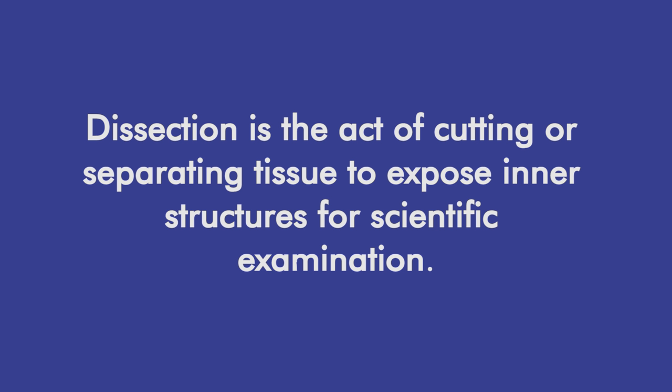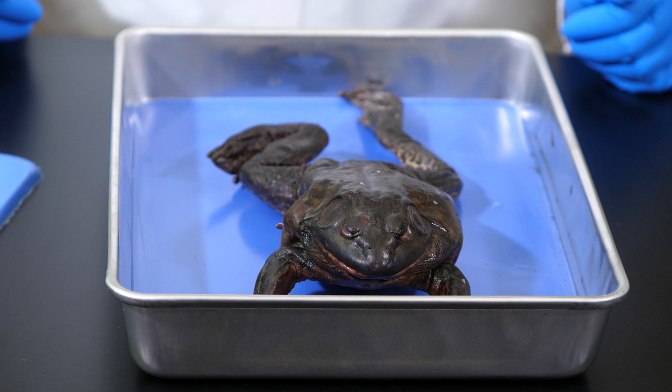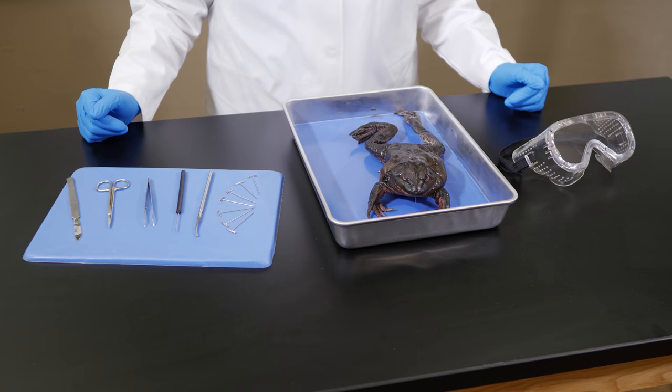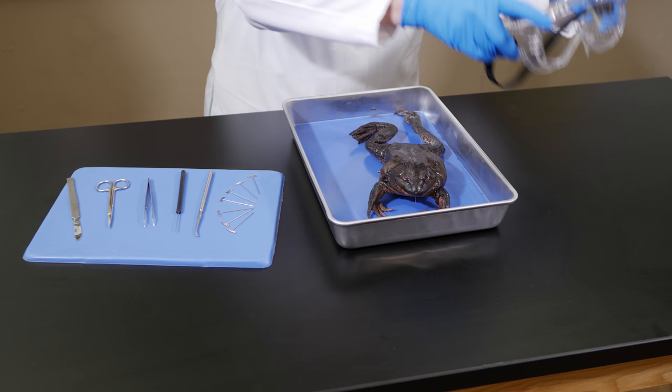To look inside an animal, we first need to dissect it. In this lab, we will introduce you to some of the terms and techniques of dissection. Dissection is the act of cutting or separating tissue to expose inner structures for scientific examination. Before we begin a dissection of a frog, let's become familiar with some of the instruments and terms used in dissection.